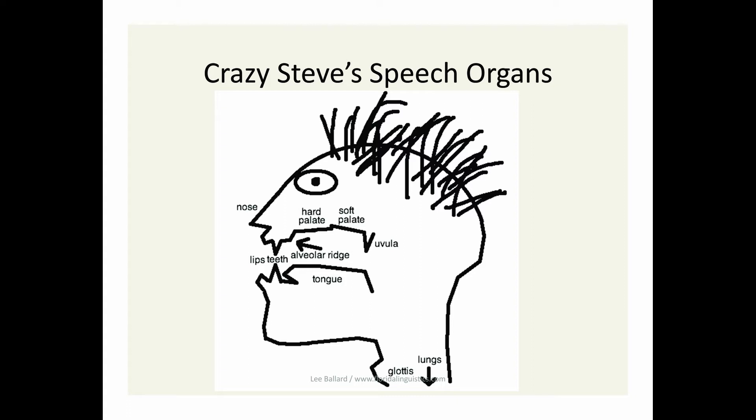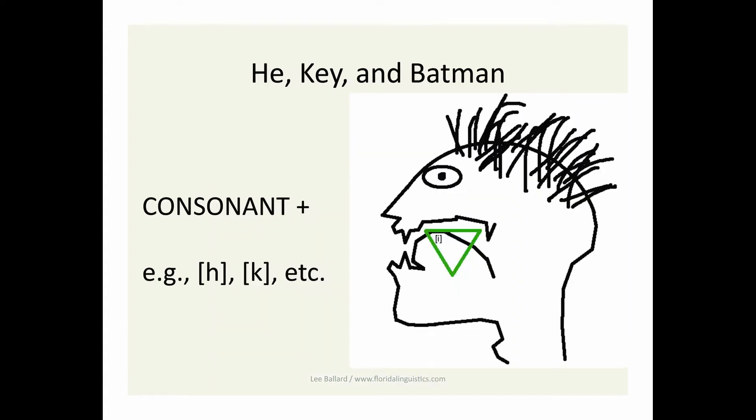Okay, now we'll look at three example words. The words are he, key, and batman. If we take the first vowel we looked at, the one in beat, we can also pronounce the word he with the same vowel.